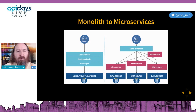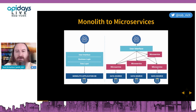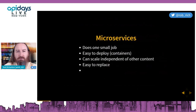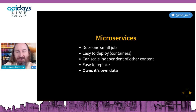As we moved from monoliths to microservices, we did great at getting our functionality into small pieces. One of the core tenants of a microservice is that it owns its own data. Each microservice owns its own data, does one small job, is easy to deploy, we can scale it independently, it's easy to replace, and in particular, it owns its own data.